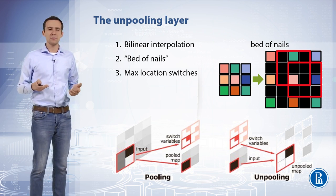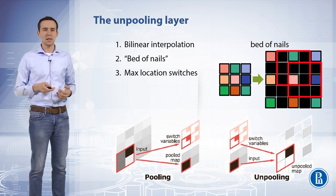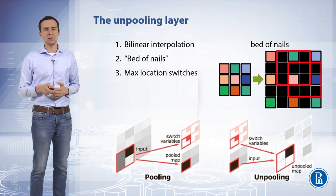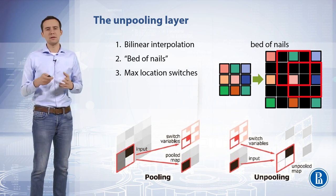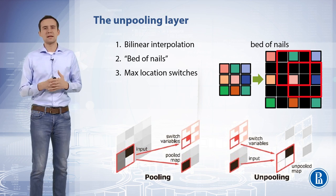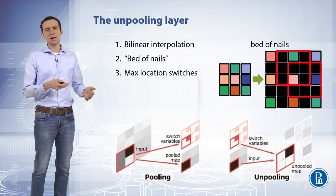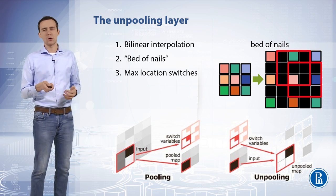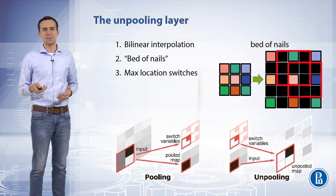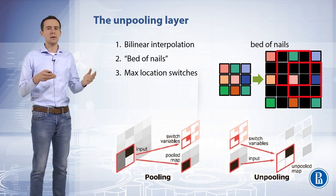Another idea to restore max pooling is the bed of nails approach, where we either duplicate or fill the empty block with the entry value in the top-left corner and zeros elsewhere. Yet another and more effective mechanism is to record the positions — called max-location switches — where the biggest values were located during normal max pooling, and then use those positions to reconstruct the data from the layer above.